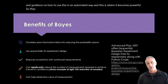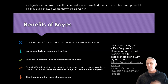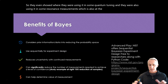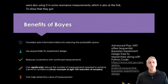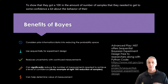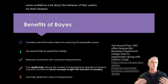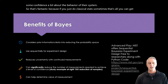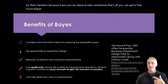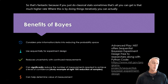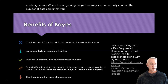They showed results using it in quantum tuning and resonance measurements — they got a 10x reduction in the number of samples needed to reach confidence about the behavior of their system. By doing things iteratively, you can actually contract the number of data points you need to get to optimization, compared to classical statistics.